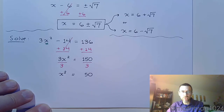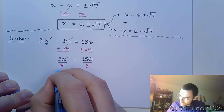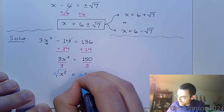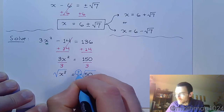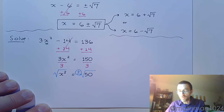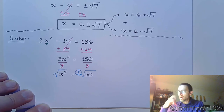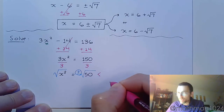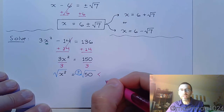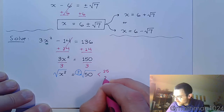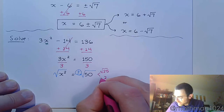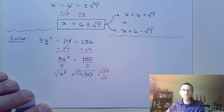The last step to get x by itself is to break through the square — you guessed it — using the square root property. Take the square root of both sides. Don't forget the plus or minus. Now, √50: 50 is not a perfect square, but we can break it down to 25 times 2. Each factor is inside a square root, so this becomes √25 · √2.